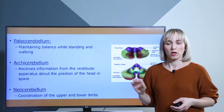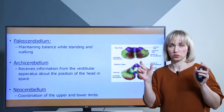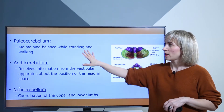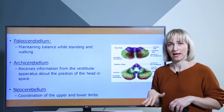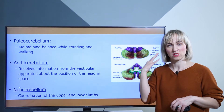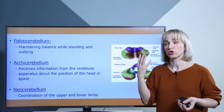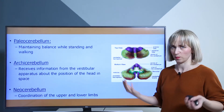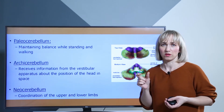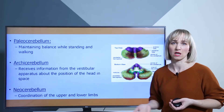Looking at the anatomy of the cerebellum, we have three parts. The paleocerebellum consists of the two hemispheres and its main activity is maintaining balance while standing and walking. The archicerebellum receives information from the vestibular system and gives information about the position of our head and body in space. The neocerebellum is responsible for the coordination of limb movements, both upper and lower limbs.